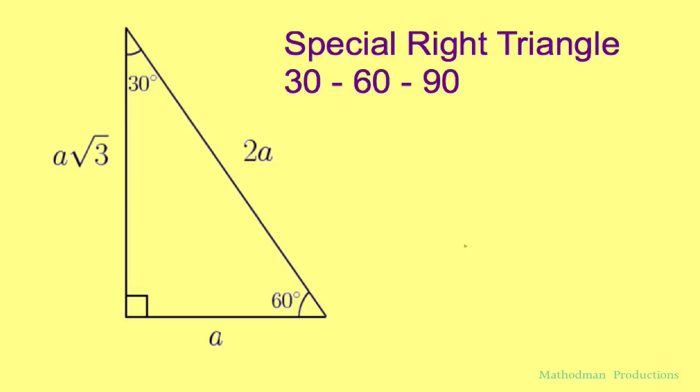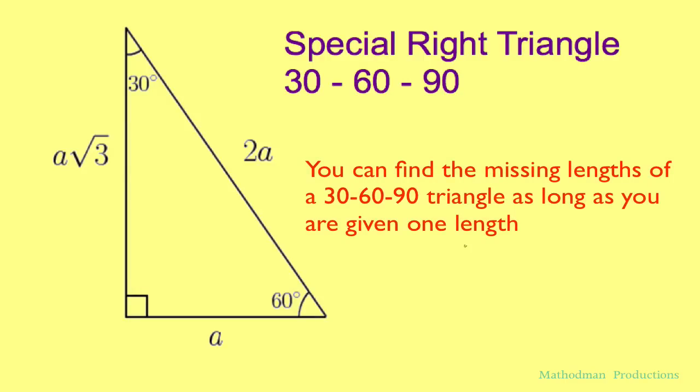Welcome geometry students to another Math and Man episode where we will be going over a special right triangle called 30, 60, 90. This triangle is used to find the missing lengths of a right triangle given one value.